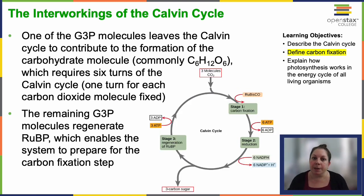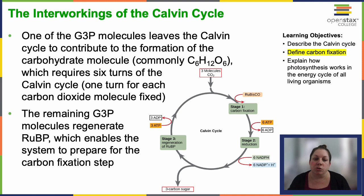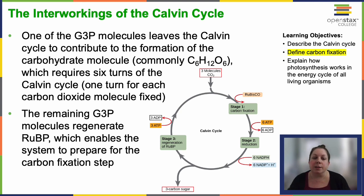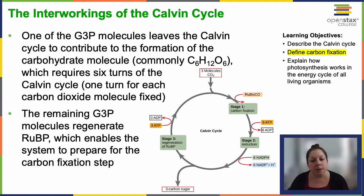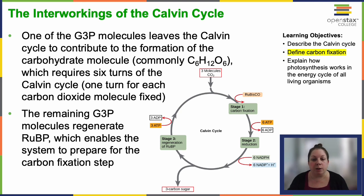One of the G3P molecules exits the Calvin Cycle to contribute to the formation of carbohydrate molecules, typically glucose, which contains six carbon atoms. Consequently, it takes six rounds of the Calvin Cycle to synthesize one carbohydrate molecule, corresponding to each fixed carbon dioxide molecule. The remaining G3P participates in the regeneration of RuBP, priming the system for the next round of carbon fixation, with ATP being employed during that regeneration step.